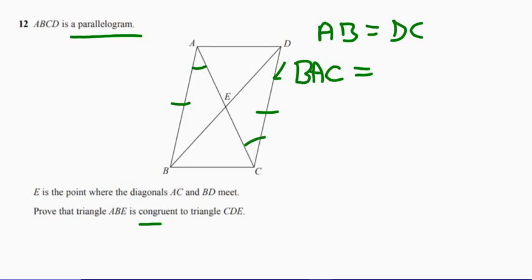So we've got angle BAC is actually going to be equal to this one just down here, so angle ACD, and that's alternate angles. So you're just thinking about rules that apply for parallelograms or parallel lines.